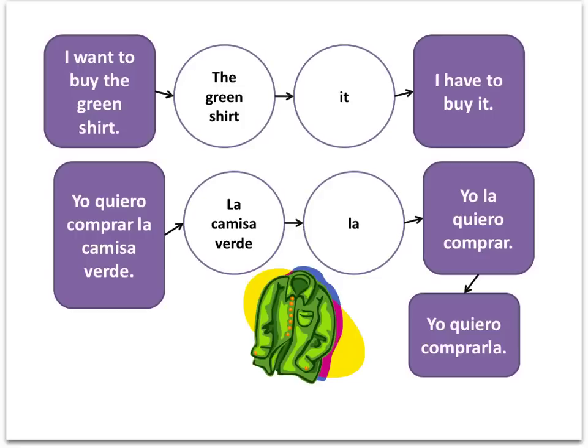Let's make our sentence a little bit more complex. Instead of saying I buy the green shirt — where buy is our only action — let's say I want to buy the green shirt. Now we've got two verbs: want, the conjugated action, and to buy, which is not conjugated. In English, we'd still ask, what is being bought? The green shirt. Then replace it with it and put it exactly where the green shirt was in the original sentence.